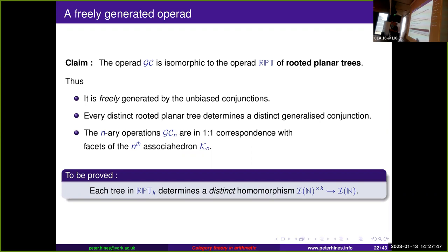A key example of an operad is that of rooted planar trees. We have a series of compositions given by plugging the root of one tree onto a leaf of another, and we identify trees up to planar topological equivalence. My claim is that the operad we get from these generalized conjunctions is isomorphic to the operad of rooted planar trees — freely generated by these unbiased conjunctions — and each rooted planar tree determines a distinct homomorphism, so homomorphisms are identical precisely when the trees are the same.